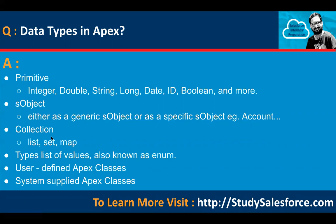If you want to store values in a group, you can use list, set, and map. Then we have enum. Then we have user-defined APEX classes and system-supplied APEX classes. APEX classes are of two types: if Salesforce already provides an APEX class, it is system-supplied; if you are creating one, it is user-defined. An APEX class can also become a data type, so you can create its instance as well.